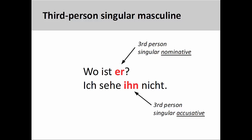Of the third-person forms, the masculine personal pronoun is the only one that changes as it moves from nominative to accusative. In the first sentence, wo ist er? — Where is he? — the personal pronoun is the subject of the sentence and therefore in the nominative case. In the second sentence, the pronoun is the direct object of the verb sehen, which puts it into the accusative case.